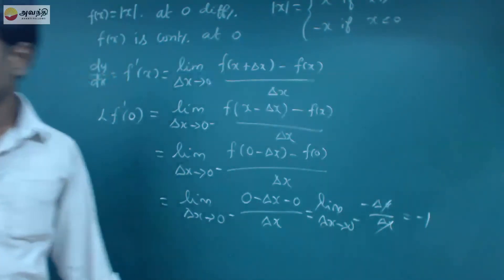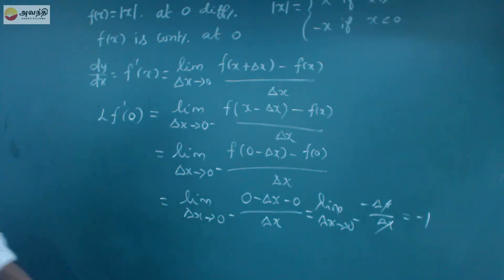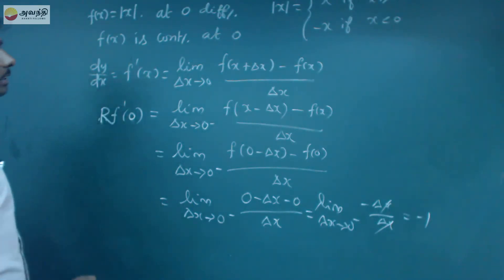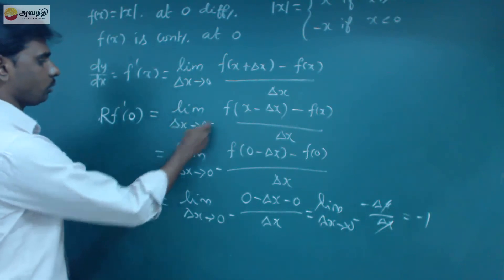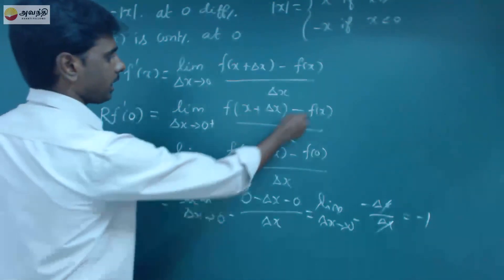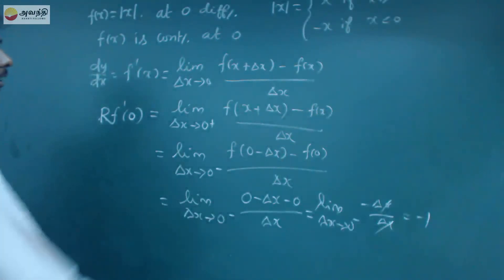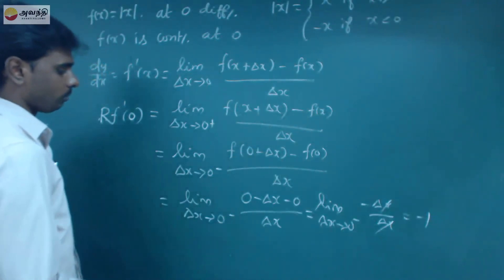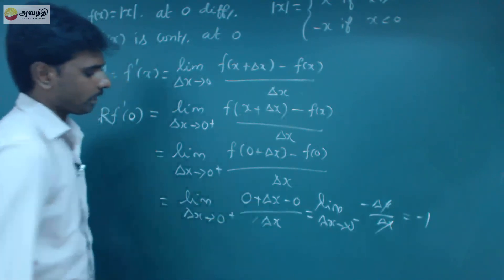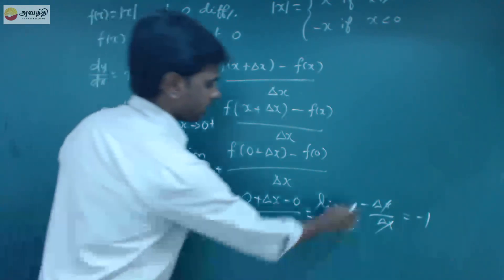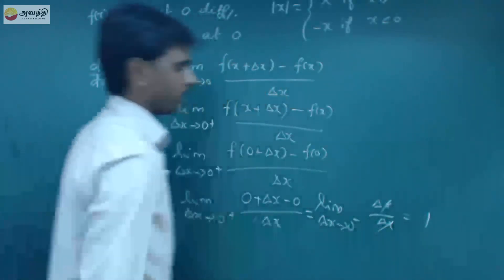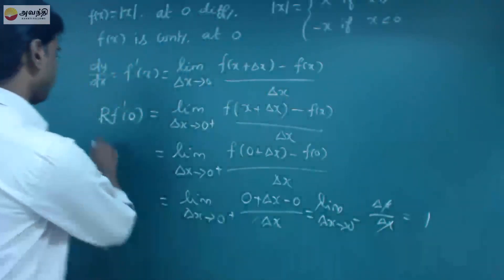Similarly, for the right-hand side: limit as Δx → 0⁺ of [f(0 + Δx) − f(0)] / Δx. Since f(x) = +x for x > 0, substituting 0 gives (+Δx) / Δx = +1. So the right-hand side limit is +1.